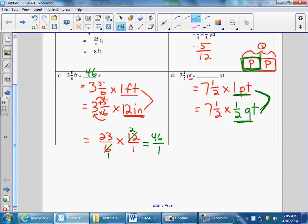From there, I'm going to change my seven and a half into an improper fraction by multiplying denominator times seven is fourteen and adding my numerator for fifteen over two. Times my one-half quart. There's nothing to cross-simplify, so fifteen-fourths. I then turn that back into a mixed number by dividing fifteen by four. Fifteen by four is three with three left over. Three and three-fourths quarts.